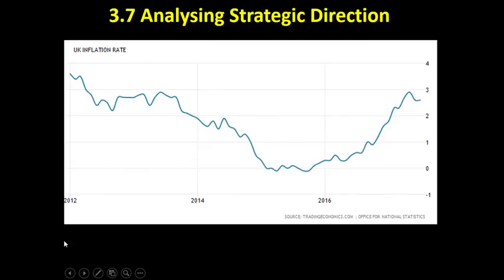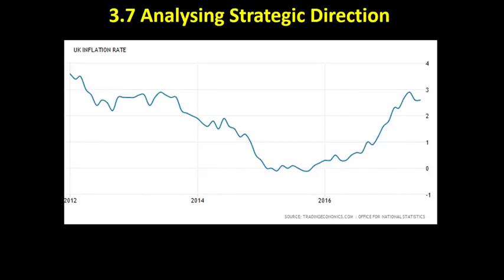Here is a graph showing the UK inflation rate from 2012 right up to today, the 1st of September 2017. There's the 2% magic mark, and the acceptable band is shown here. You can see that before 2012 we were above that acceptable band — it was around 5.2% at some point in 2011 or 2012. So inflation was higher than we wanted it to be.